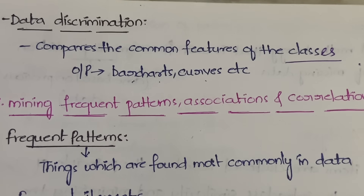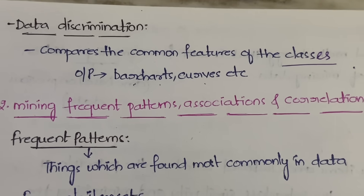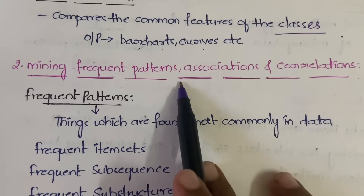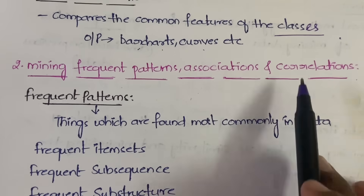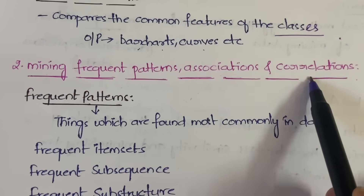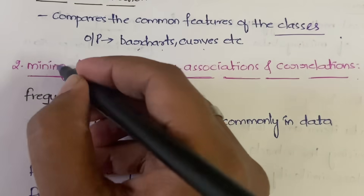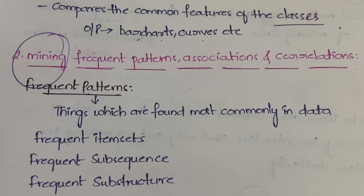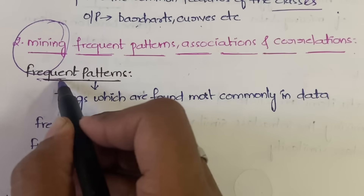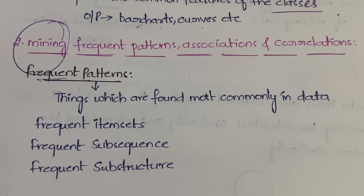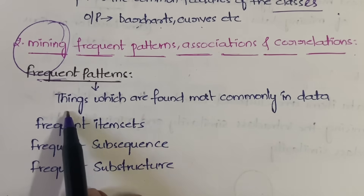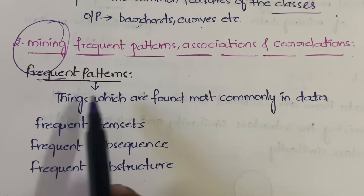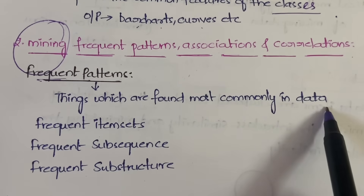The second functionality is mining frequent patterns, associations, and correlations. Mining means extracting. Frequent means happening most commonly — so frequent patterns are nothing but patterns which are found most commonly in the data.